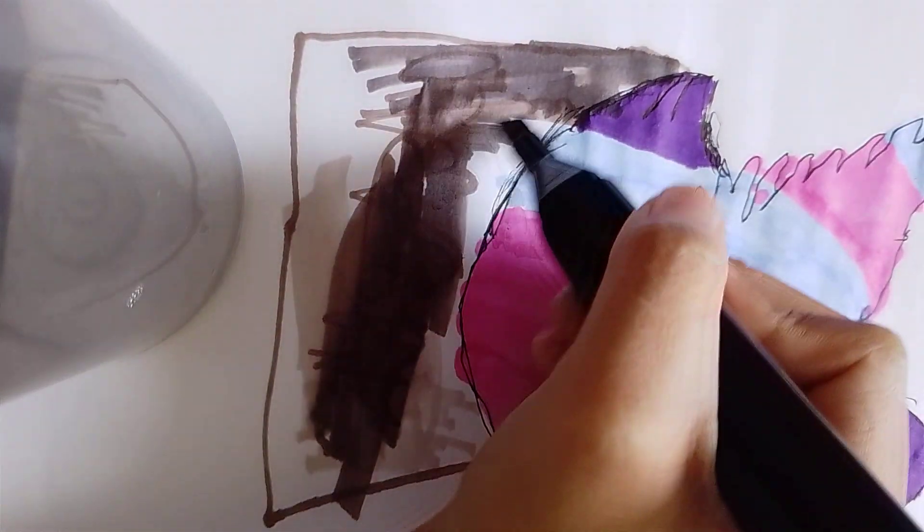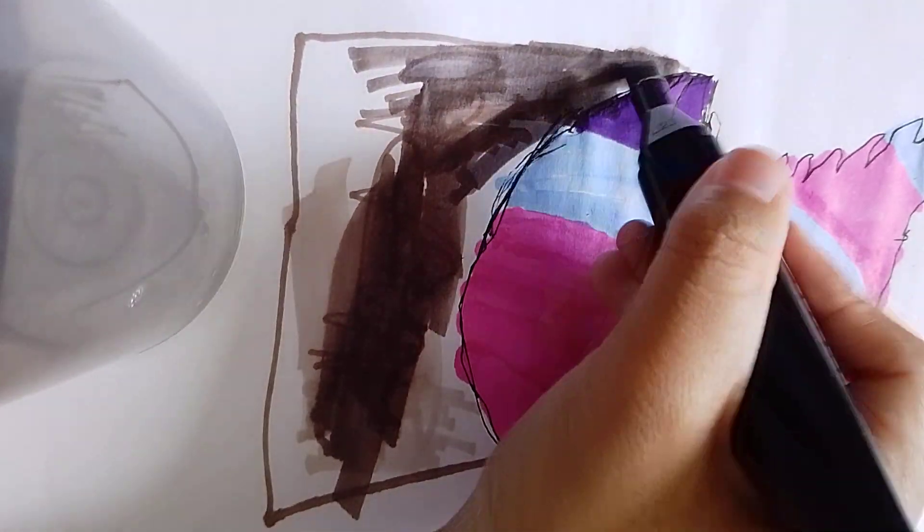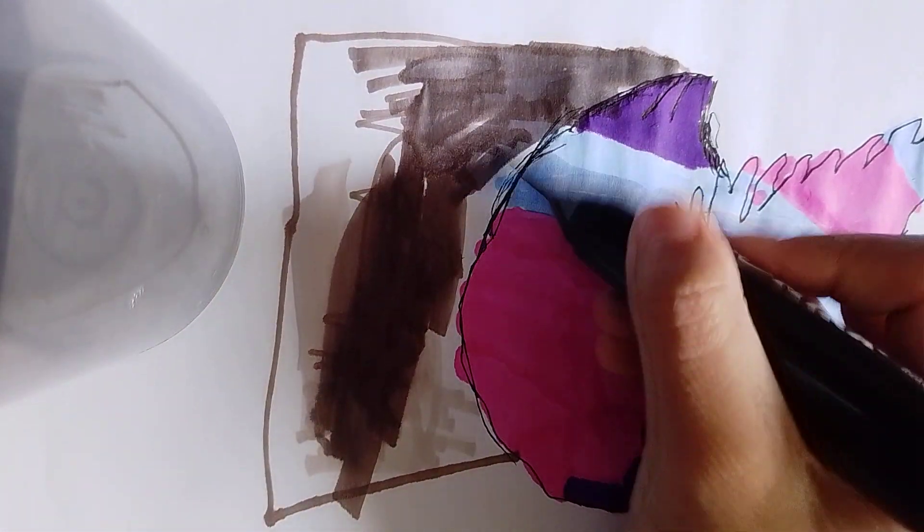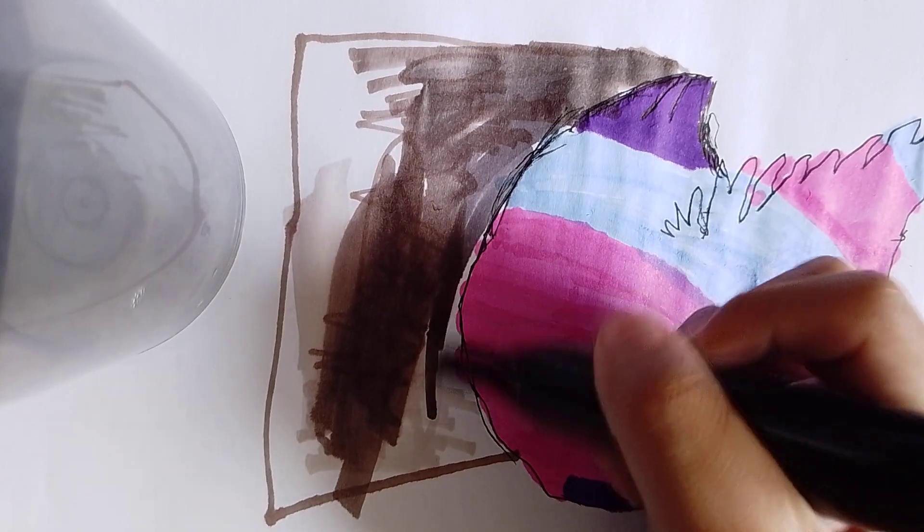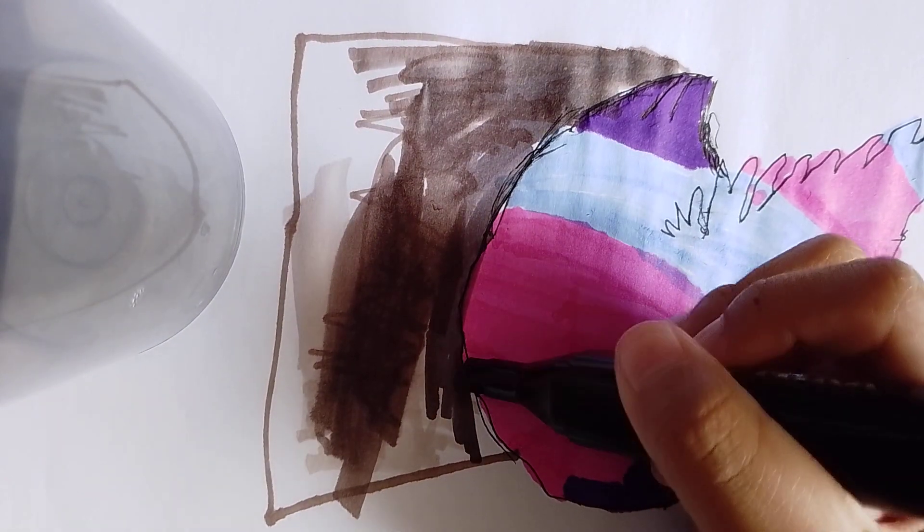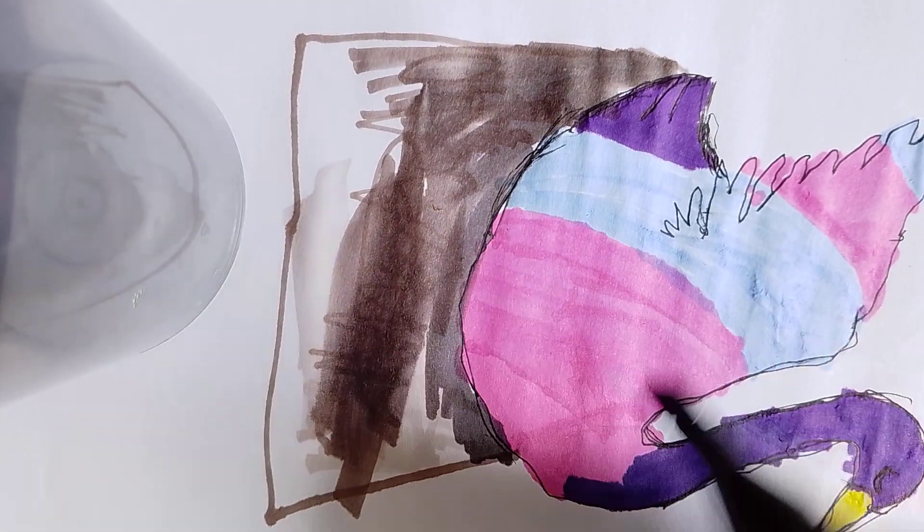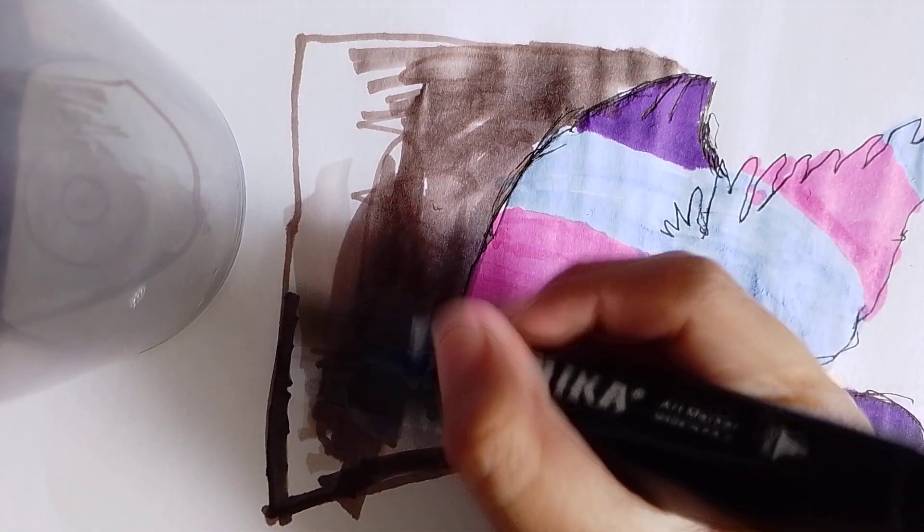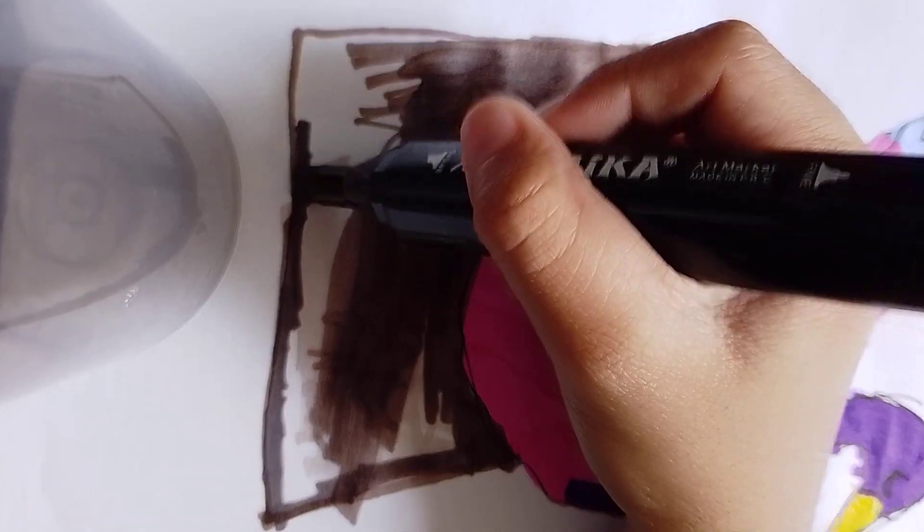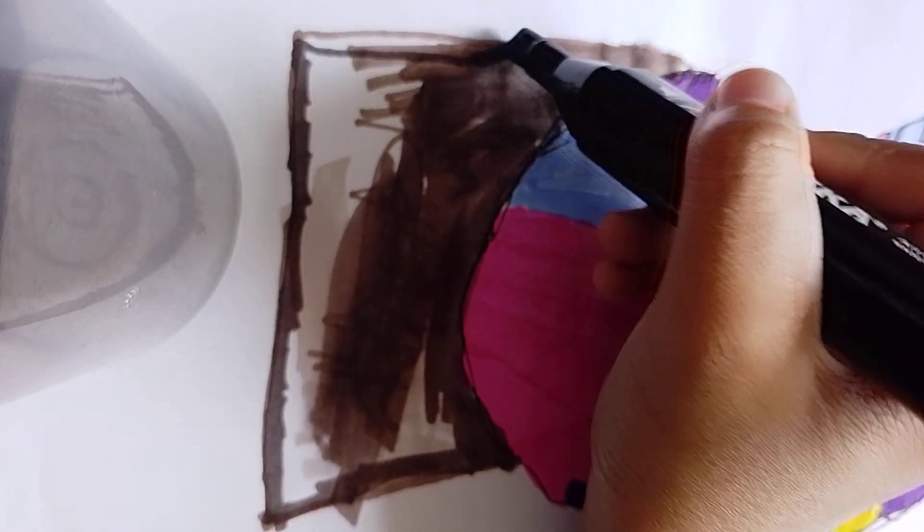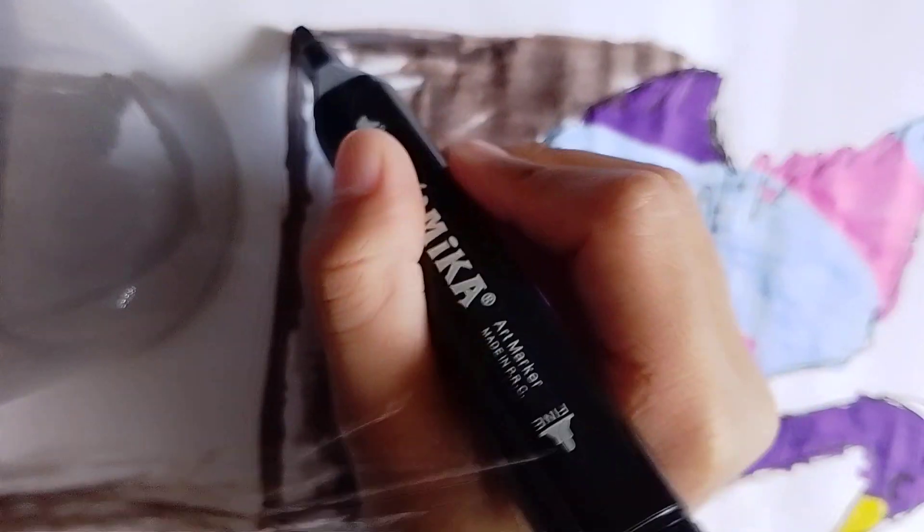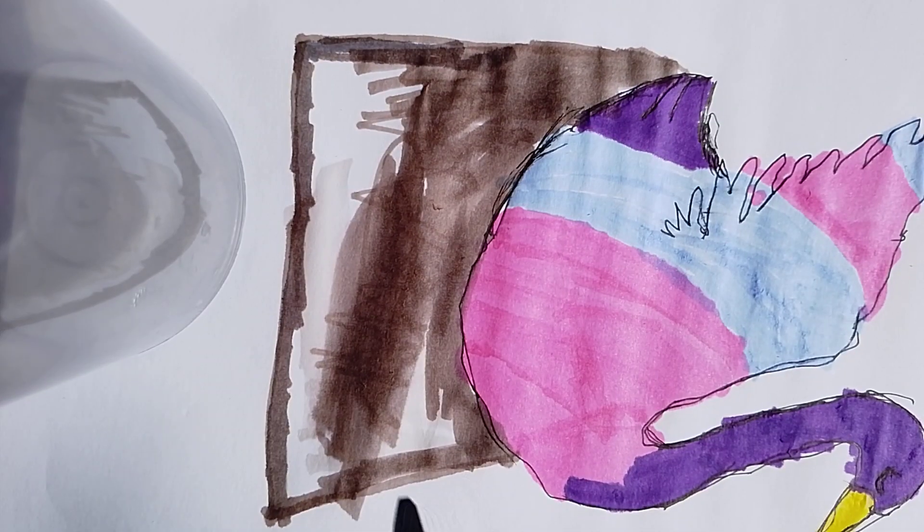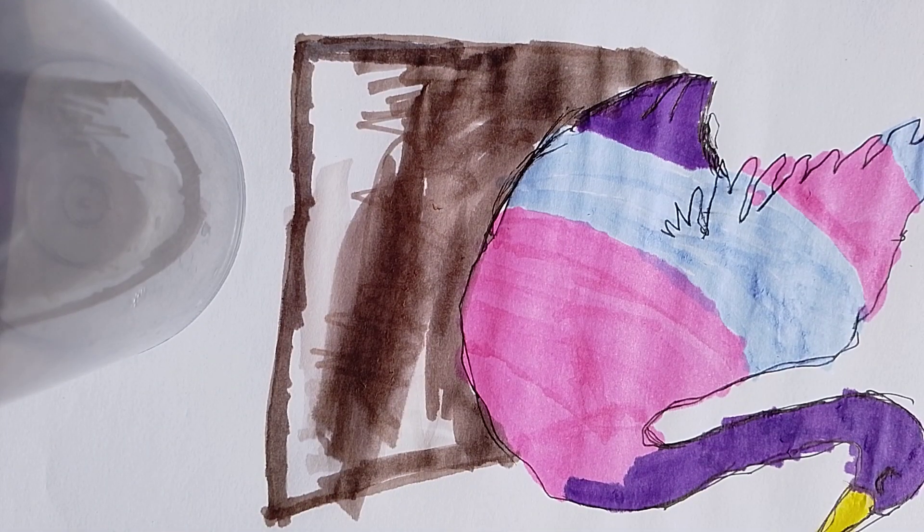Just ignore the squiggly lines that are brown. I'm coloring the edges so I can color the inside. Oopsies.